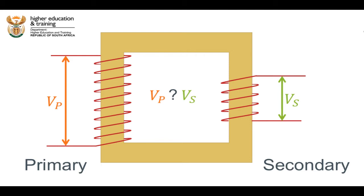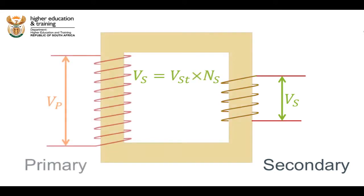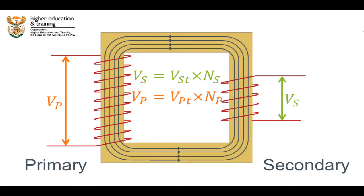Let's take a closer look at the secondary coil for a moment. The turns can be thought of as arranged in series. Therefore, the voltage across the whole coil is divided equally between each turn. This means that the total voltage across the coil is equal to the voltage across each turn multiplied by the number of turns. The same equation can be written for the primary coil. But since the same magnetic flux is passing through both the primary and secondary coils, the voltage across each turn in each coil will be the same.